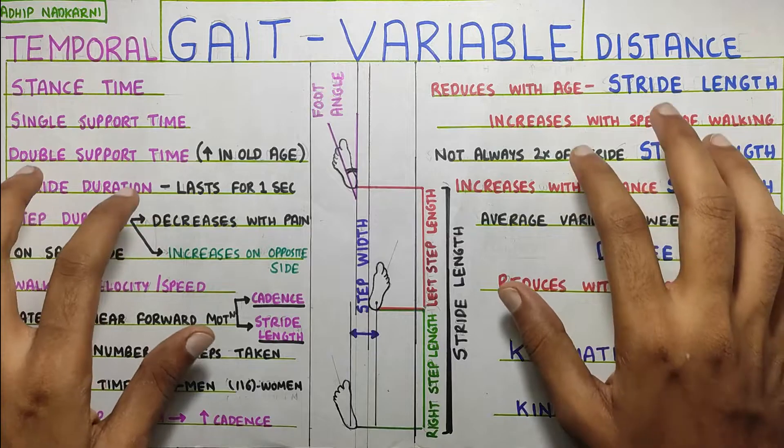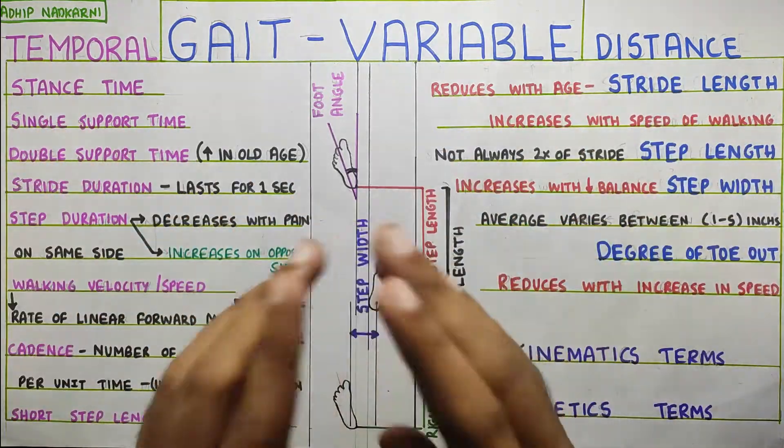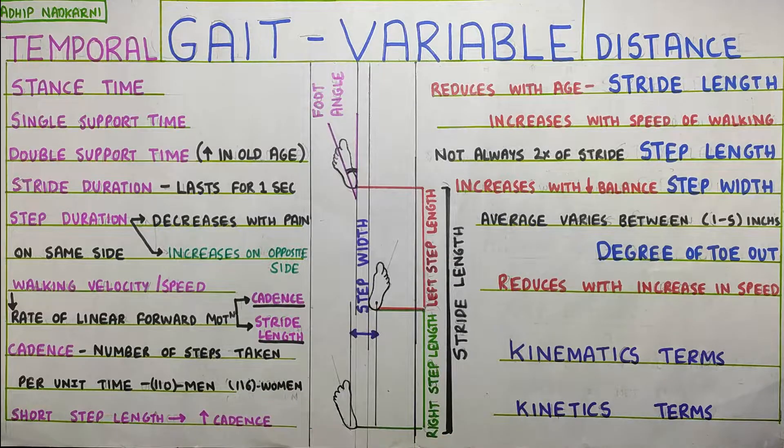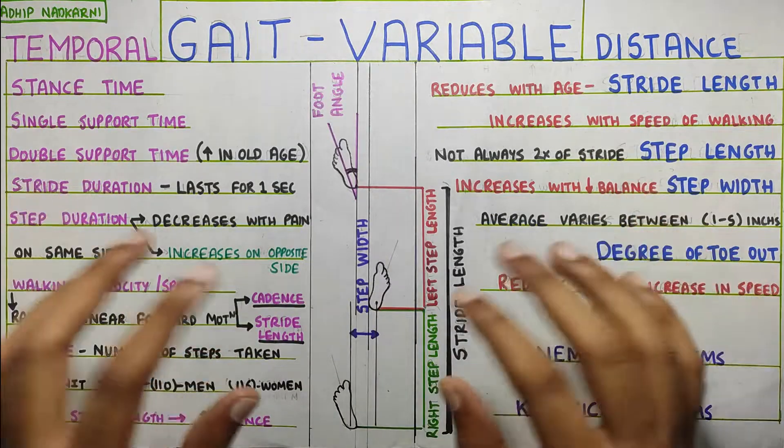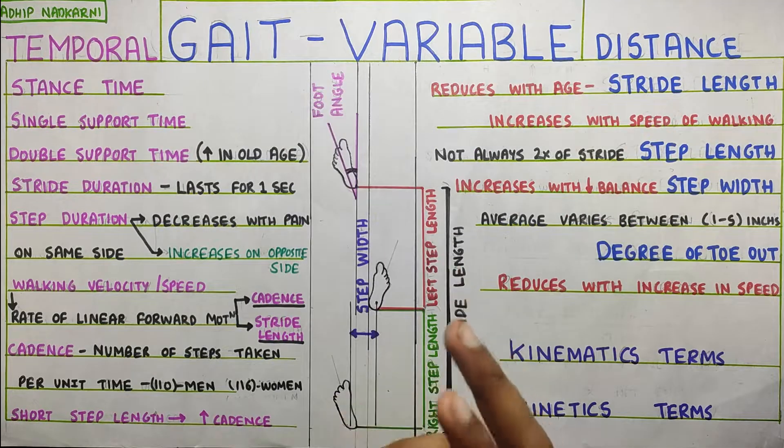So, these are the parameters that we have and once we understand the normal values, the deviation can help us to identify the problems that can be present in the whole gait cycle and come up with a valuable output or a diagnosis in the final case.